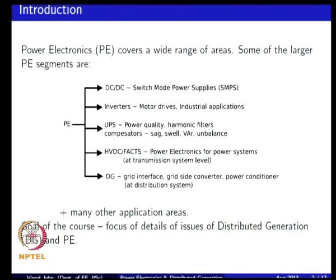Then you have inverters, which are extensively used in industrial applications, especially motor drives. Then you have power quality equipment — a very common power quality equipment that is used is a UPS, to ensure that you have power availability even when there is a disturbance in the grid. You also have harmonic filters and compensators to compensate vars, compensate harmonics, and to adjust your voltage in the presence of sags and swells.